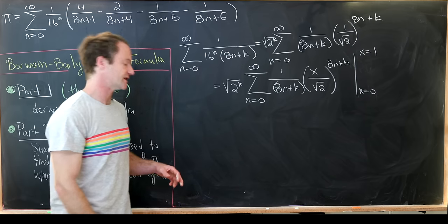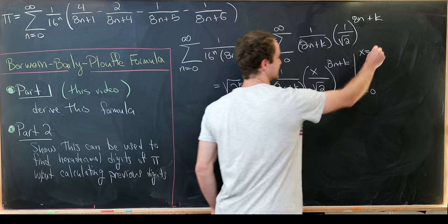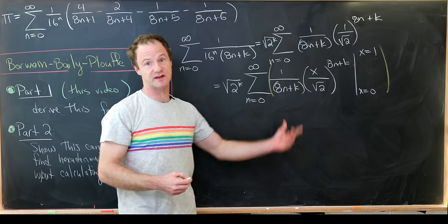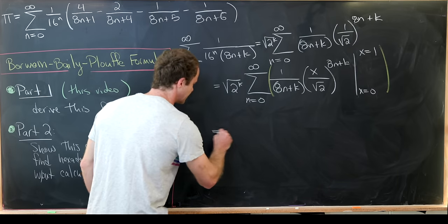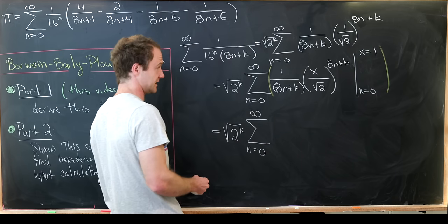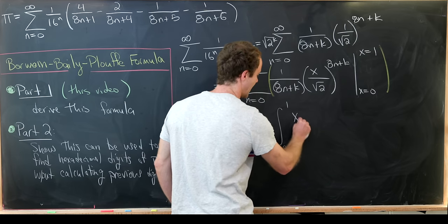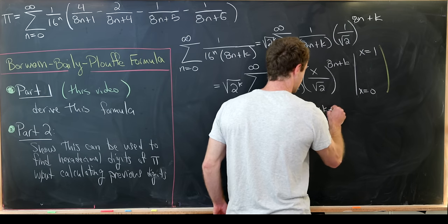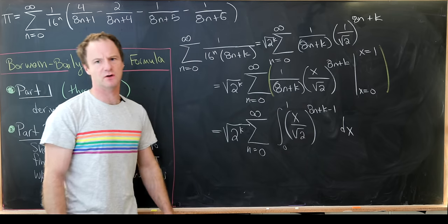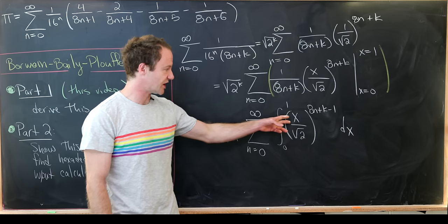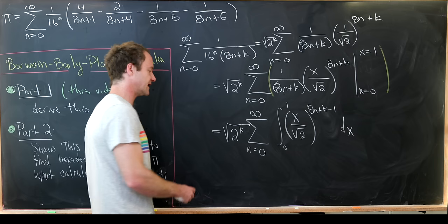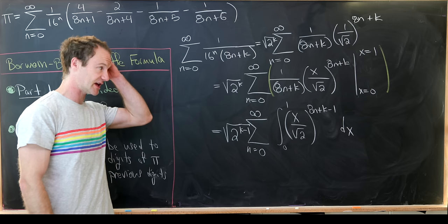Now I can apply the fundamental theorem of calculus and replace this 0th integral — this evaluation at two points — with an integral, a first integral, by taking the derivative of the function. That'll give me the square root of 2 to the k out front, and then the sum as n goes from 0 to infinity, and then the integral from 0 to 1 of x over the square root of 2 to the power 8n plus k minus 1 dx. By taking the derivative, my 8n plus k came down and canceled, and then I have a 1 smaller for my exponent. But by the chain rule I get a square root of 2 in the denominator, which cancels this square root of 2 to the k down to a square root of 2 to the k minus 1.